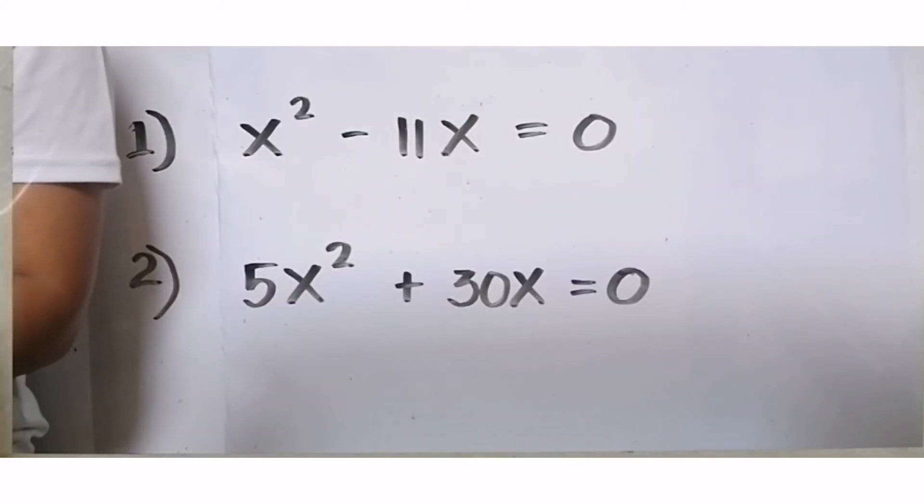It's quiz time! Hanapin ang solutions for the following. Number 1, x² - 11x = 0. At number 2, 5x² + 30x = 0. Time starts now!